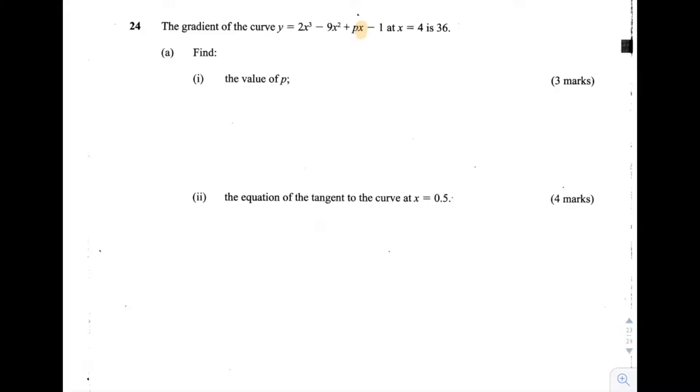So this is p here. Let's start with part 1, finding p. Since we're told the gradient of the curve at x is equal to 36.